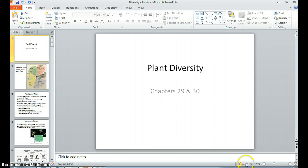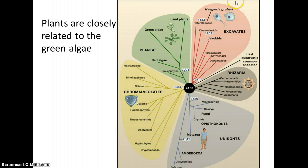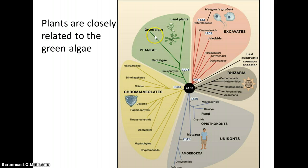Now we're going to talk about plant diversity, chapters 29 and 30 in the textbook. Here is our look at all of the eukaryotes. We're up here with land plants, these organisms that are closely related to the green algaes, this type of protist.